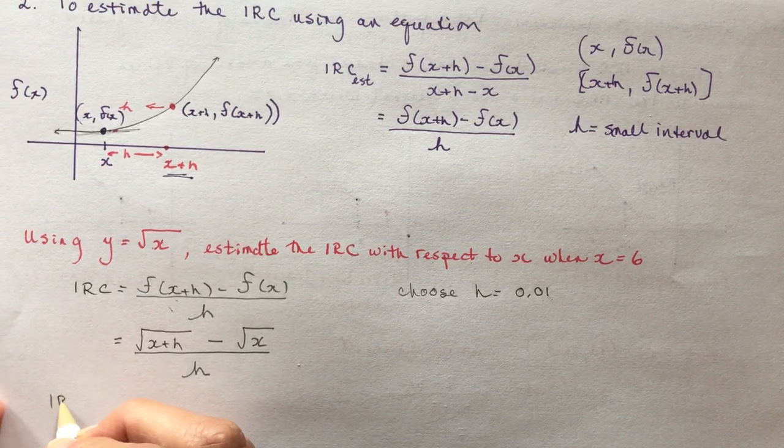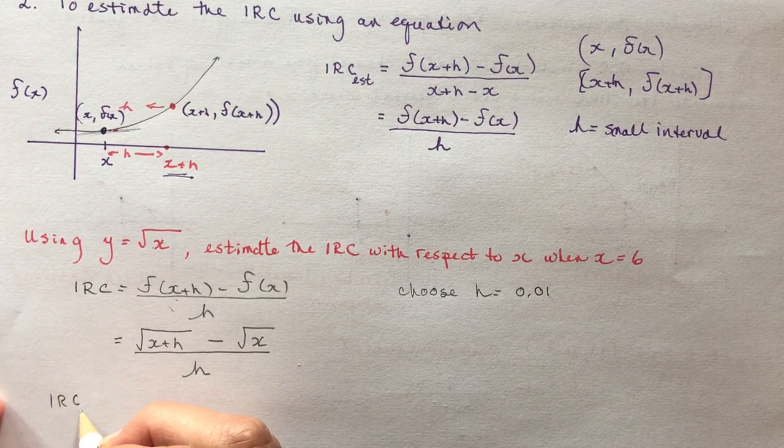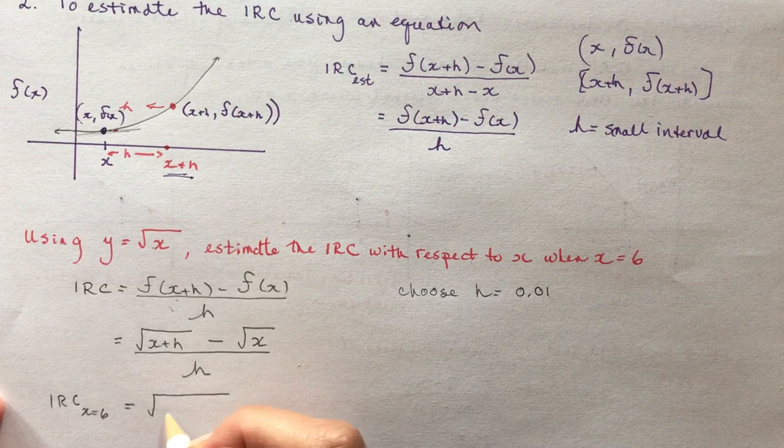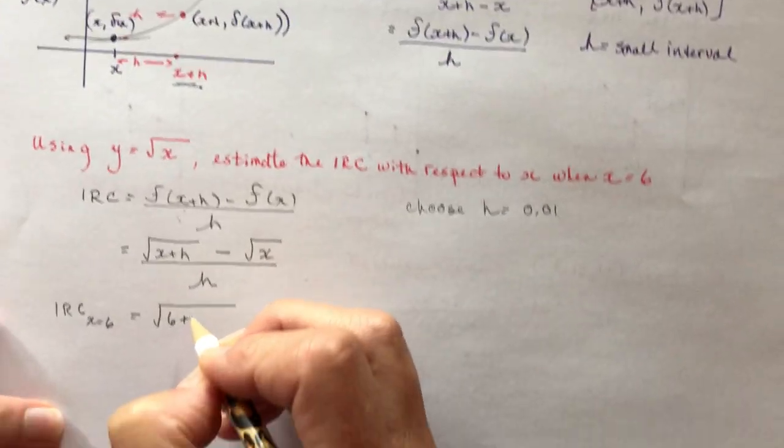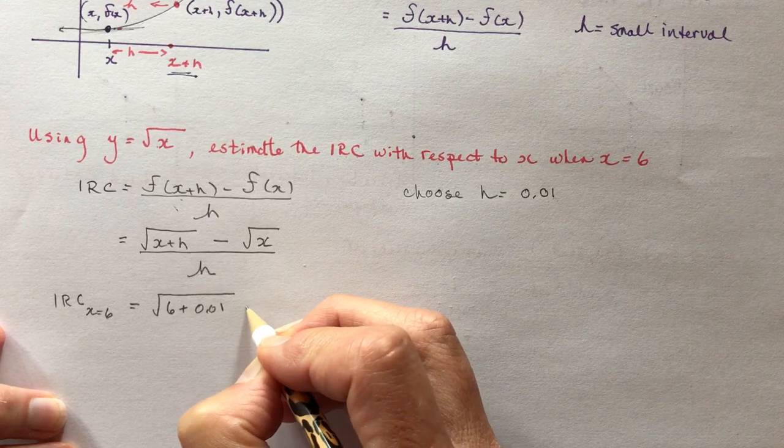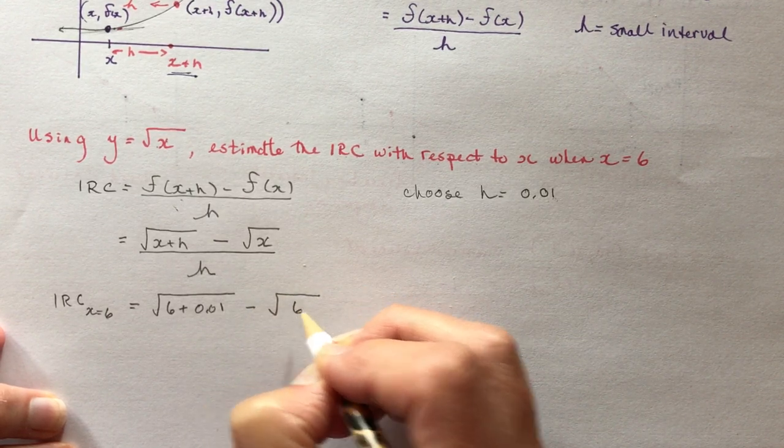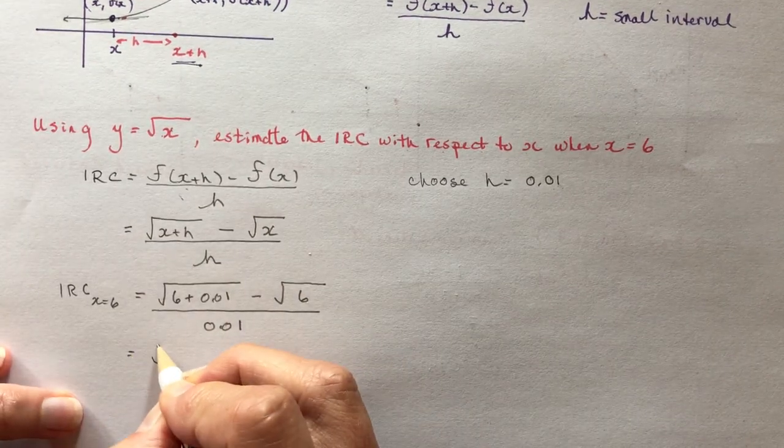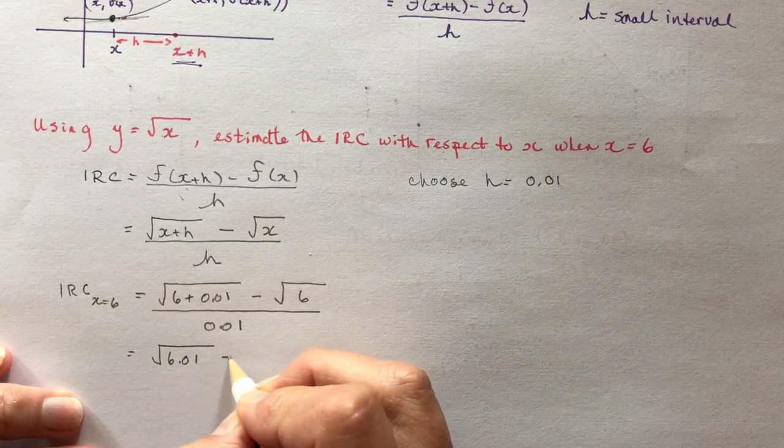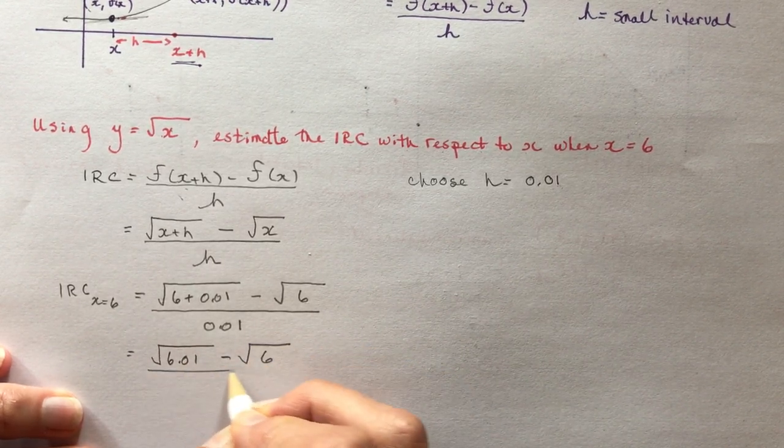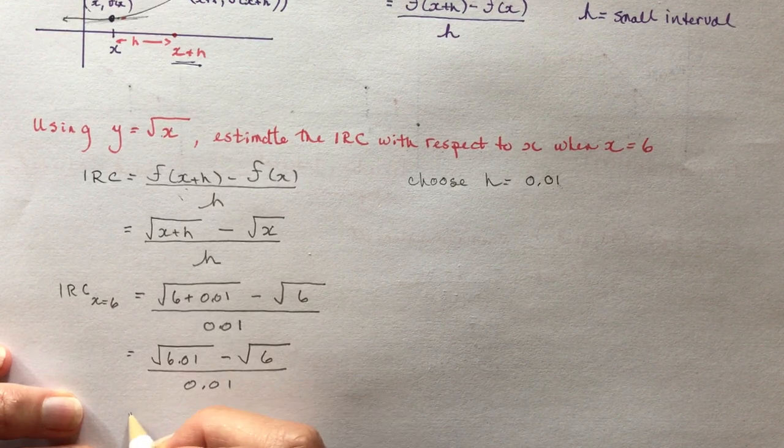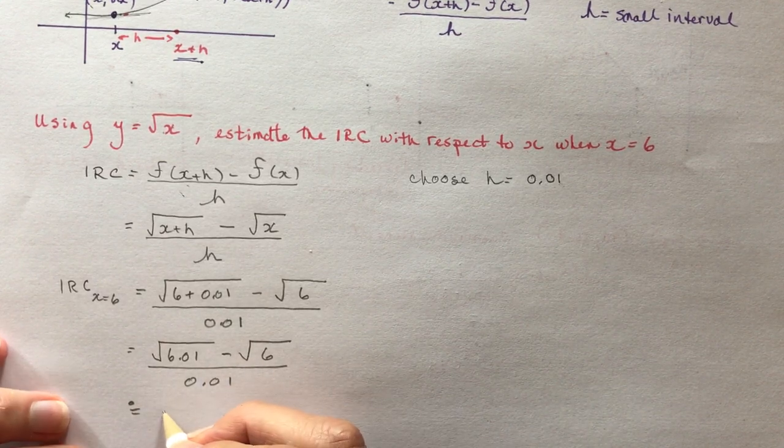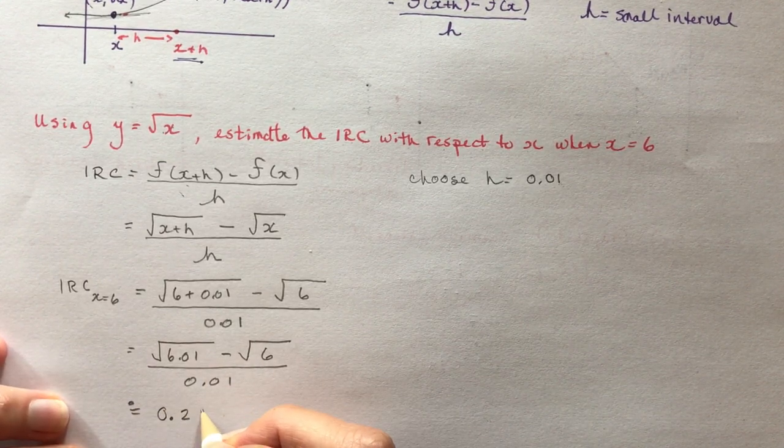Instantaneous rate of change when x is equal to 6. So I'm plugging in 6 now, so I'm going to have the square root of 6 plus 0.01, over the square root of 6 divided by 0.01. What's the square root of 6.01 minus the square root of 6 divided by 0.01? And if you do that calculation, I'm not going to write it all out every line, it comes out to about 0.204.